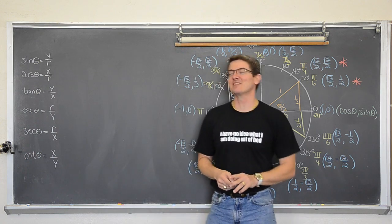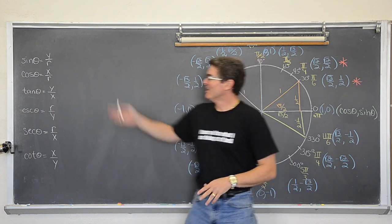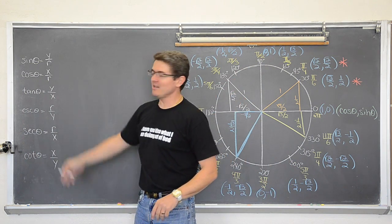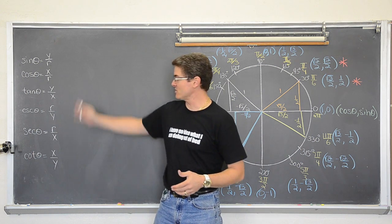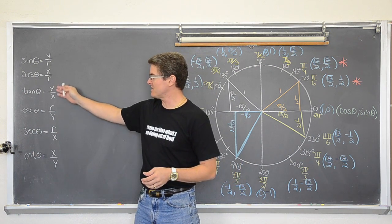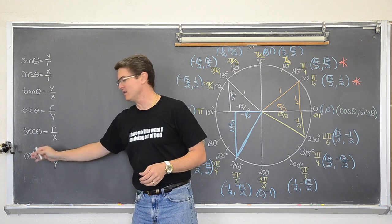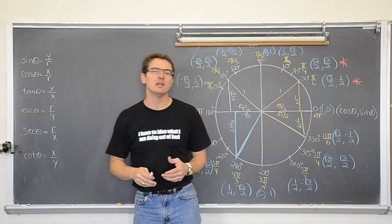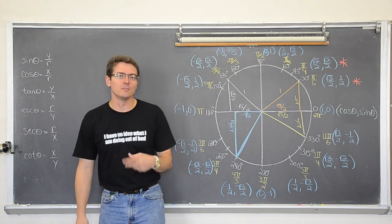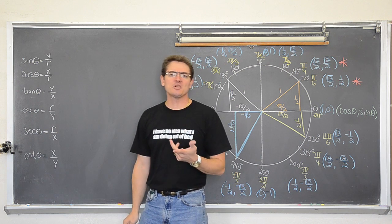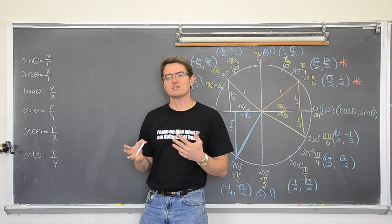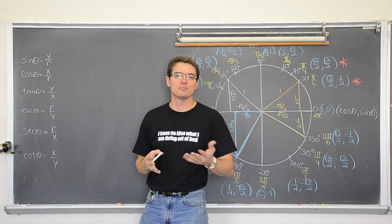We just got done setting up the unit circle, evaluating some basic trig expressions using these three trig identities: sine, cosine, tangent, cosecant, secant, and cotangent. Now I am going to use these in relation to the unit circle and help explain where some of the small identities come from that you will be looking at in your pre-calc or your trig book.